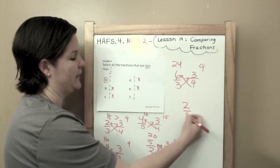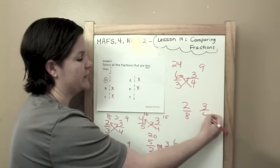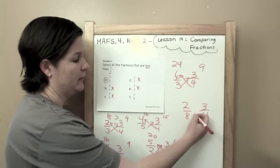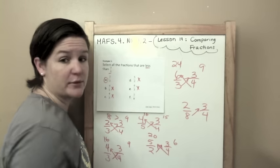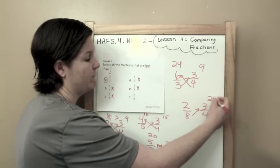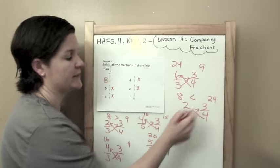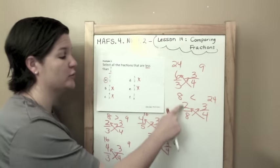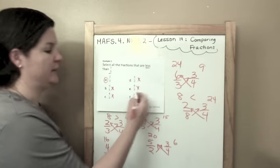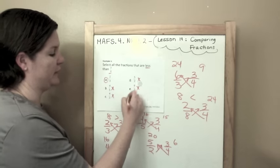Come on 2 eighths. Give me something to work with. Something to select. 8 times 3 is 24. 4 times 2 is 8. 8 is less than 24. So 2 eighths is less than 3 fourths. That is correct.